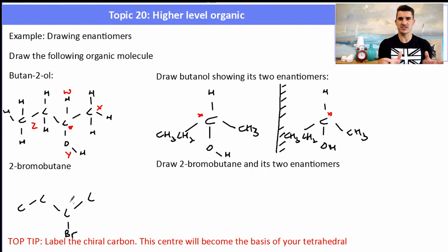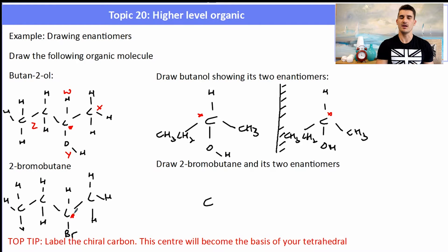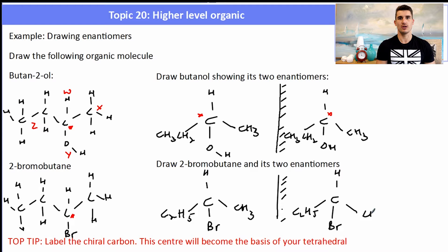For 2-bromobutane, we do a similar thing. Draw the straight-chain molecule with the bromine on the second carbon, then set up the enantiomers so the chiral center is a tetrahedral. Put in groups W, X, Y, and Z, making sure they're labeled correctly, then draw the mirror image to get the enantiomer. They would both be called 2-bromobutane, but there are two optical isomers of 2-bromobutane. Top tip: make sure you label the chiral carbon and then use that as the basis of your tetrahedral.